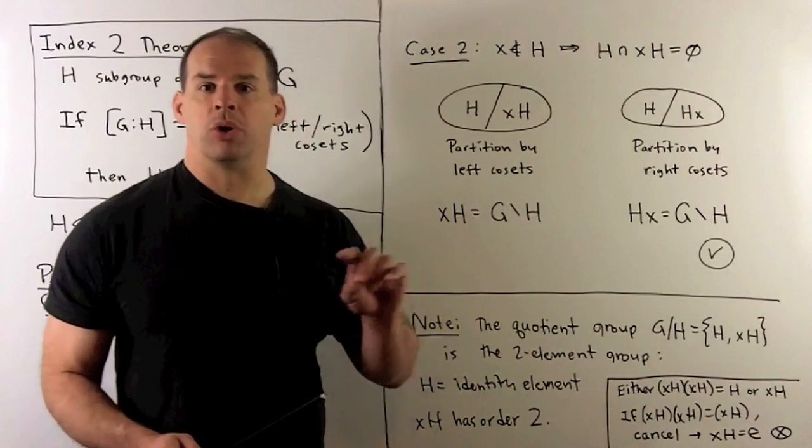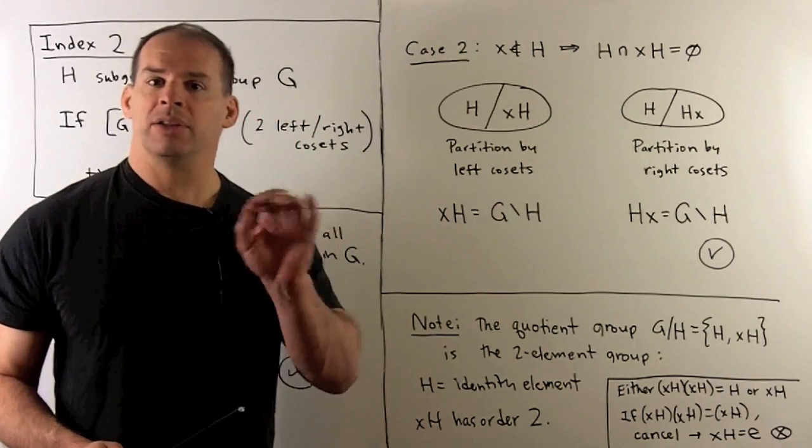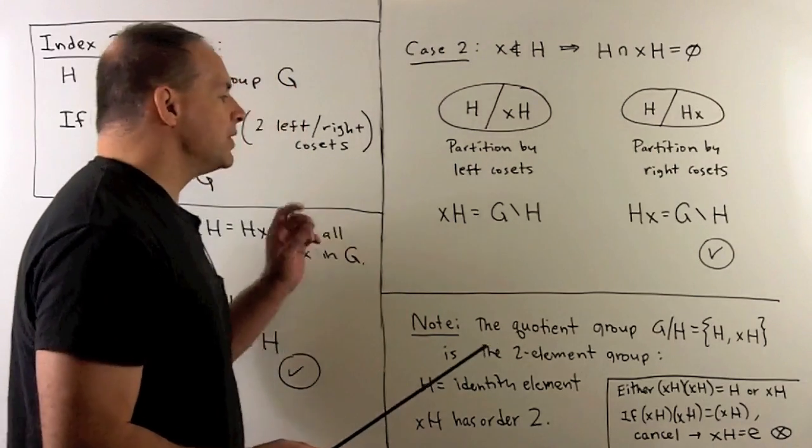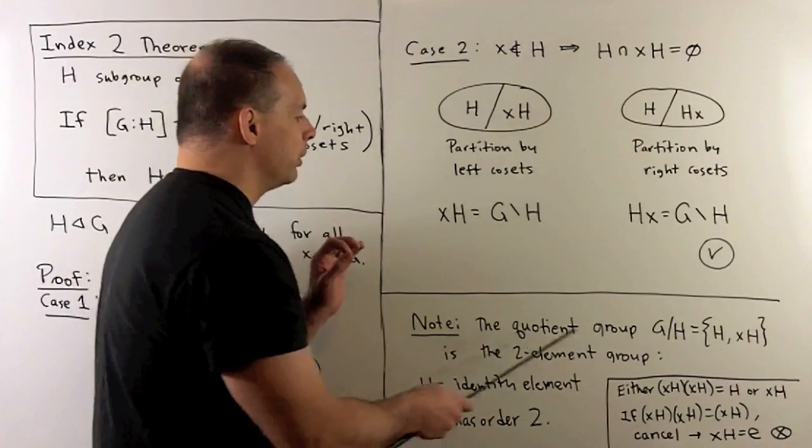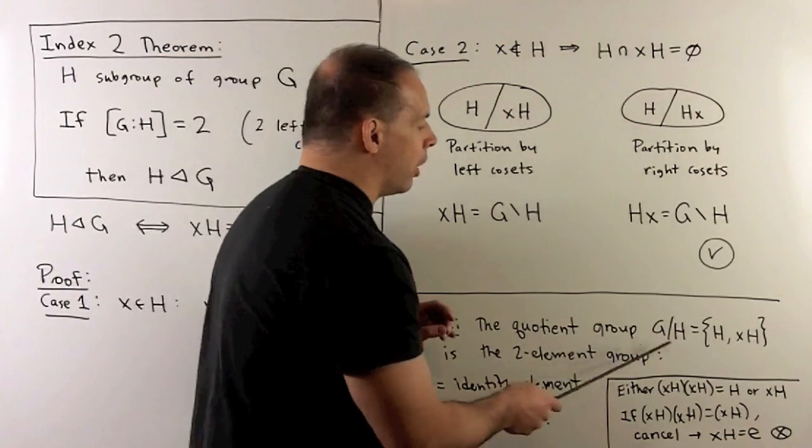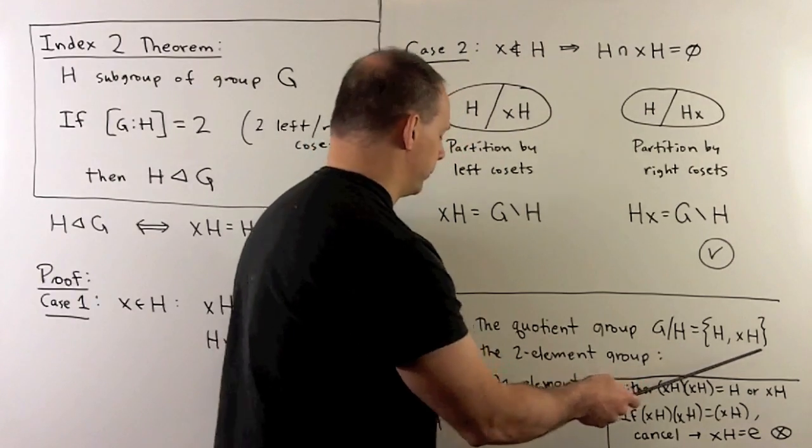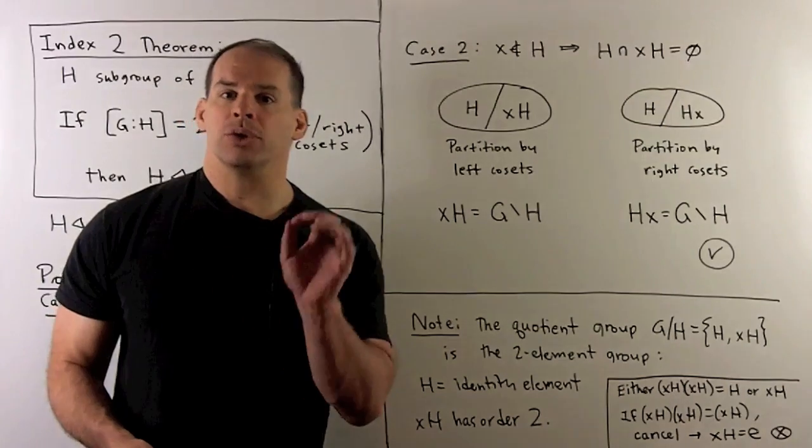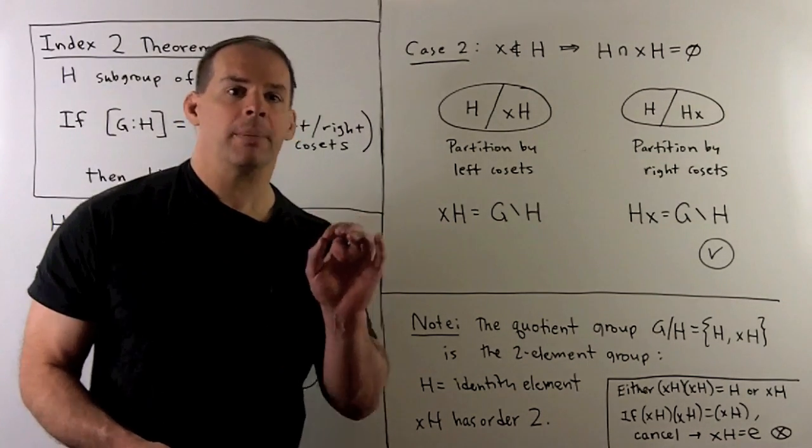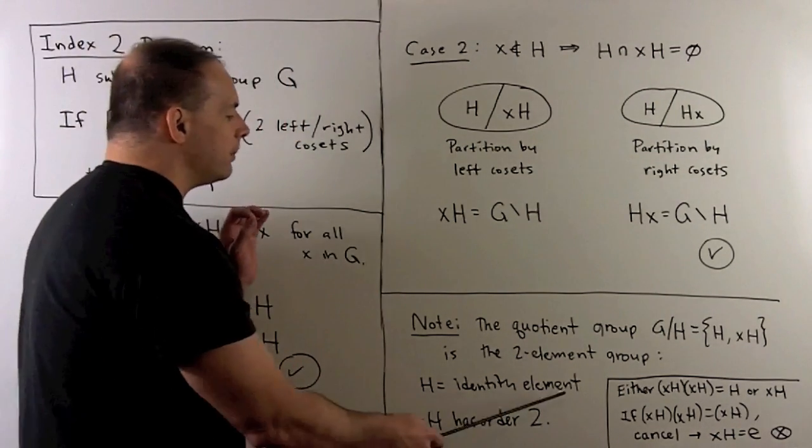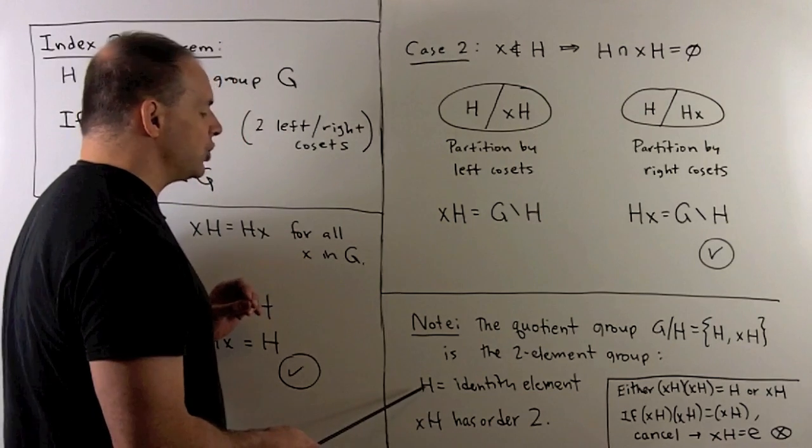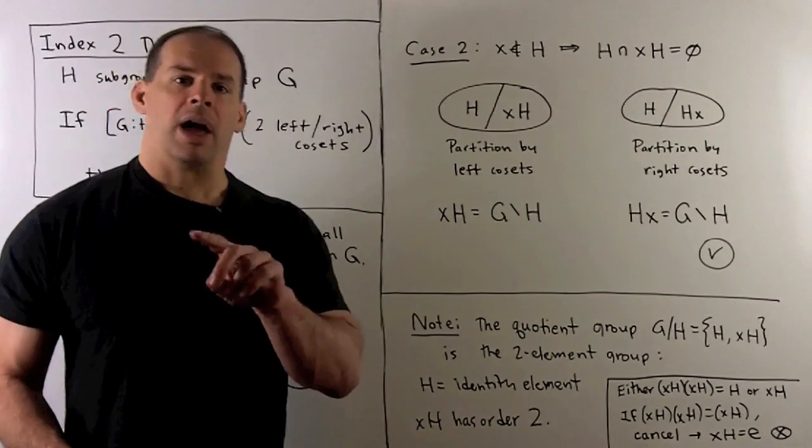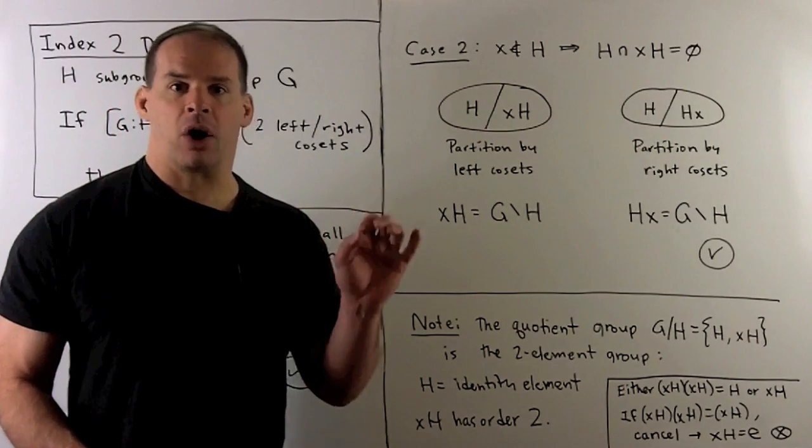Recall, we could put a group structure on the space of cosets. Here it's not going to be very interesting. We're going to put a group multiplication on the cosets, so we have a two-element group. In essence, there's only one two-element group. We have the identity element, in this case the subgroup H, and then the other element is going to have order two. I haven't shown that before, so let's go through that argument.